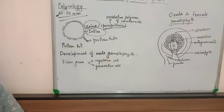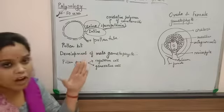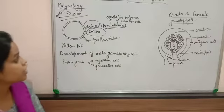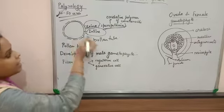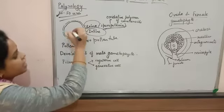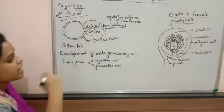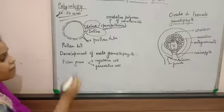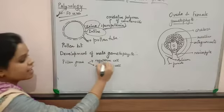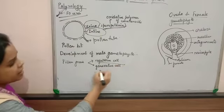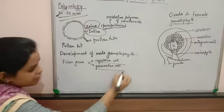Coming on to intine — intine is the innermost region. Inside intine there are two types of cells: one is the vegetative cell and another is the generative cell.